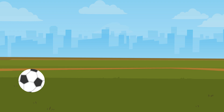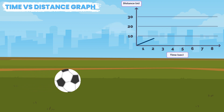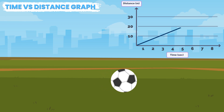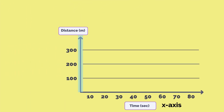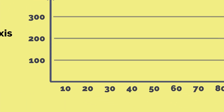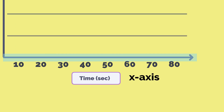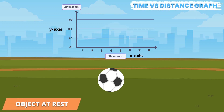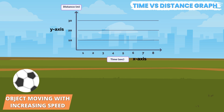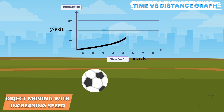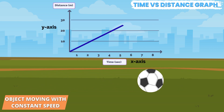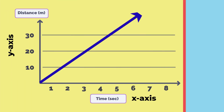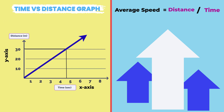If an object is moving in a straight line, we can use a distance versus time graph to describe the motion. This graph represents the total distance covered by an object at a given time. The distance is measured in meters and plotted on the y-axis, while time is measured in seconds and plotted on the x-axis. If an object is not moving, the line is horizontally flat. If an object has an increasing rate of speed, the line will have a positive slope. If an object is moving at a constant speed away from the starting position, the line will be straight. The steeper the slope of the line, the higher the average speed of the object.